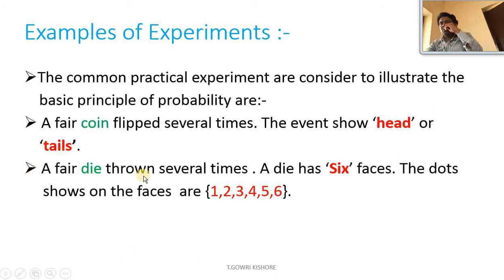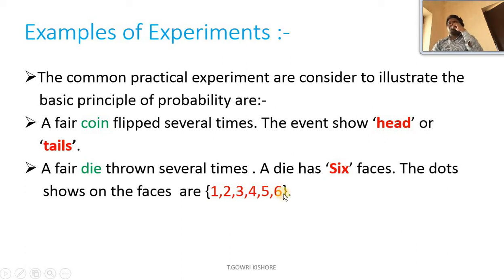A fair die thrown several times. A die has six faces. The dots shown on the faces are one, two, three, four, five, six. These are the total outcomes when you throw a die.